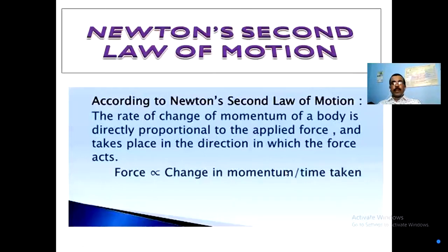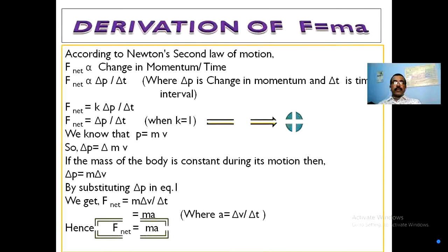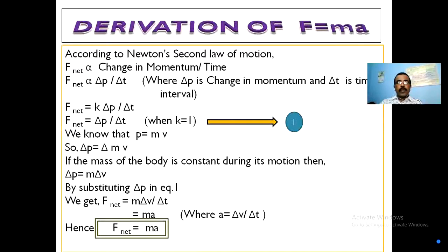So we get F = ma. Now the derivation part: the derivation of F = ma from Newton's second law means F is directly proportional to mass into acceleration, F = ma. The net force F is equal to change in momentum by time, so F = delta p by delta t.